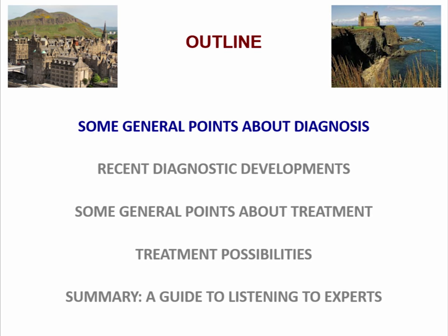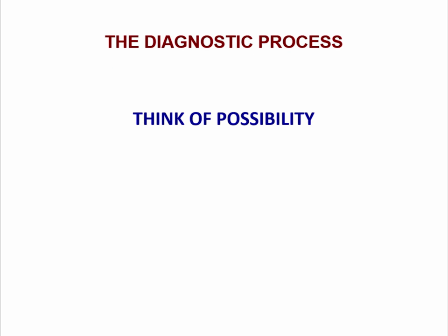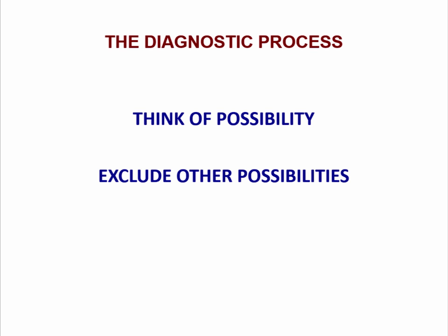Some general points about diagnosis. The diagnostic process, if you present to a neurologist with one of these diseases, is first of all that the presentation is very non-specific. People who present with sporadic CJD can present in ways very similar to many other diseases. So obviously the neurologist has to think of the possibility, and there will be a range of possibilities the neurologist has to exclude.